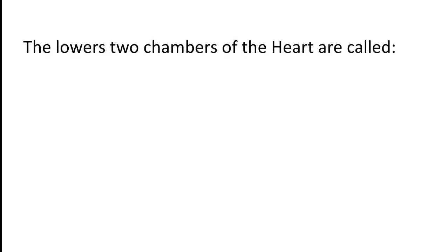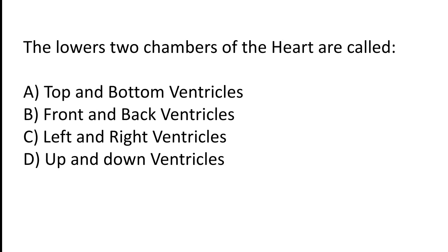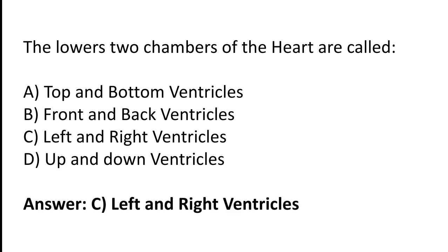The lower two chambers of the heart are called: Top and bottom ventricles, front and back ventricles, left and right ventricles, or up and down ventricles. The correct answer is option C. The lower two chambers of the heart are called left and right ventricles.